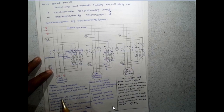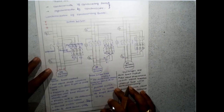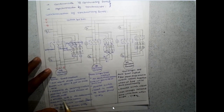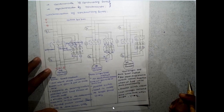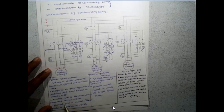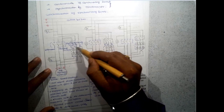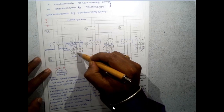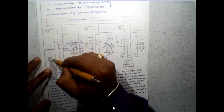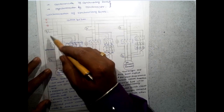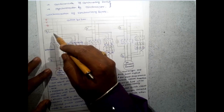You can adjust frequency by adjusting the rotation speed via the field rheostat of the compound motor. The flicker rate depends on the frequency difference between the two systems. When there is more flickering, there is more frequency difference. The parallel switch is closed when all three lamps are in their dark period — at the middle of their dark period. You must also simultaneously ensure the terminal voltage is equal.